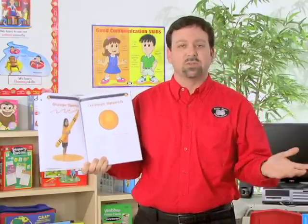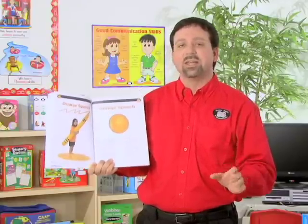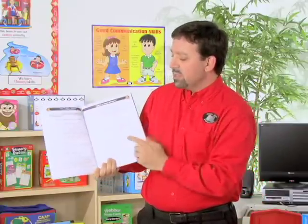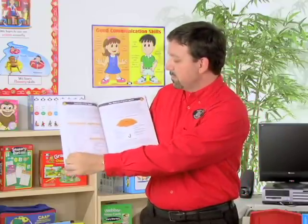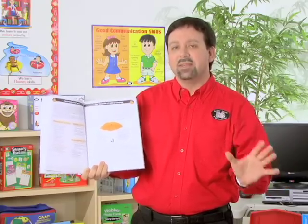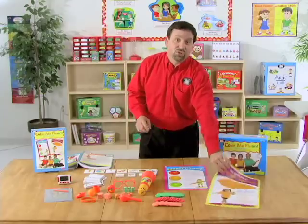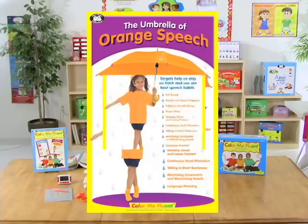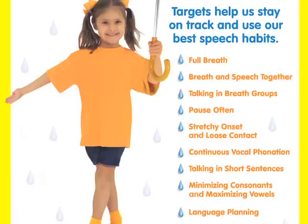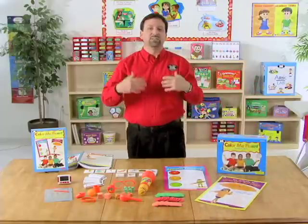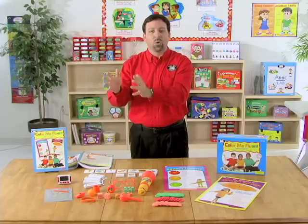That moves us directly into orange speech. If you remember, this is the section of the program where we actually implement fluency strategies in order to provide a more fluid production. We're going to target common terms, and we'll show that under the umbrella of orange speech there are many different aspects. We also have a poster included that indicates the umbrella of orange speech, identifying all the different characteristics found there. This can be used as a visual reminder for students as they practice these activities and remember what they need to focus on.